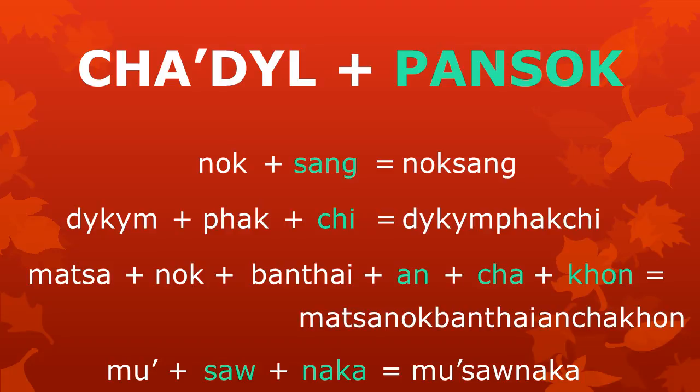And as our last example, we can combine the tzadl 'mu'' with the pansok 'sao' and 'nakkha' to make the word 'mu' saonaka'.